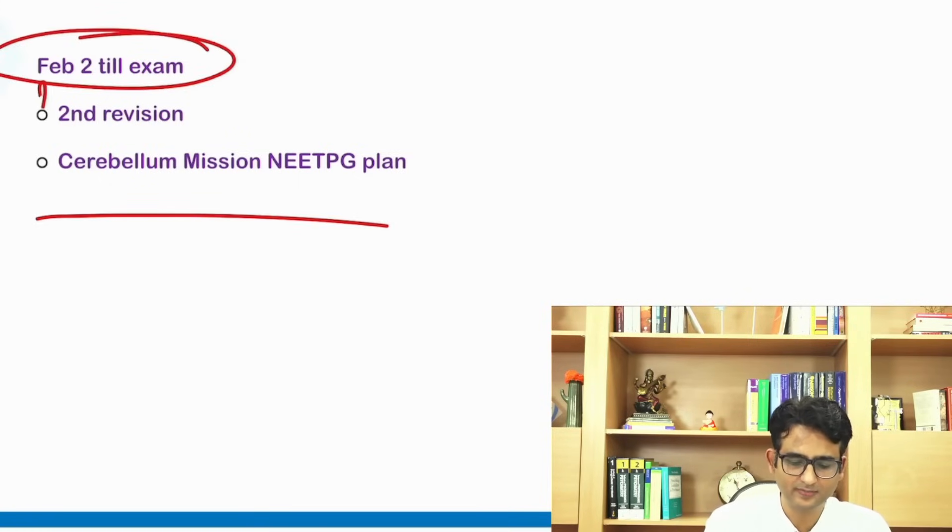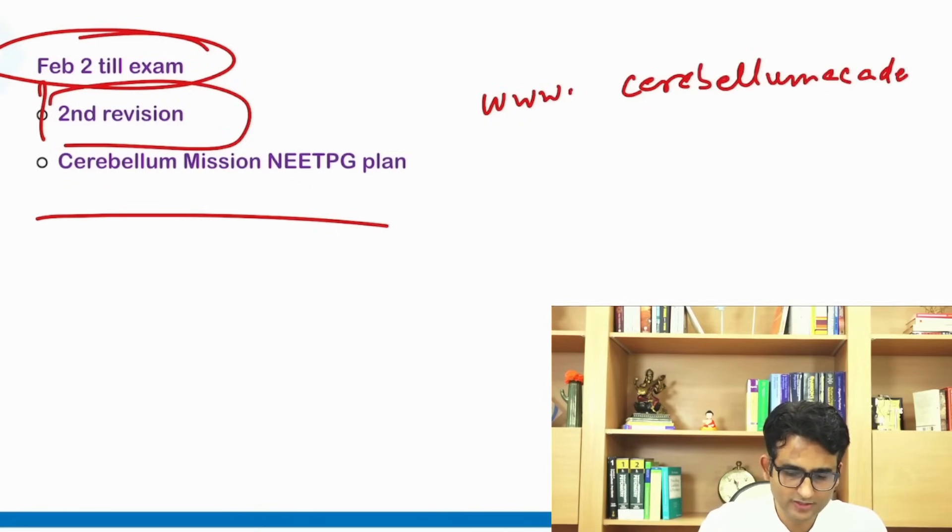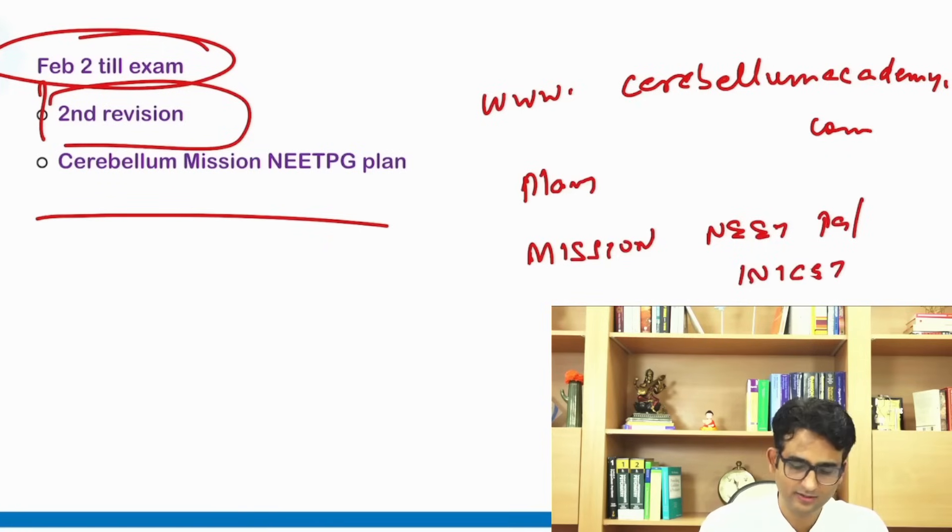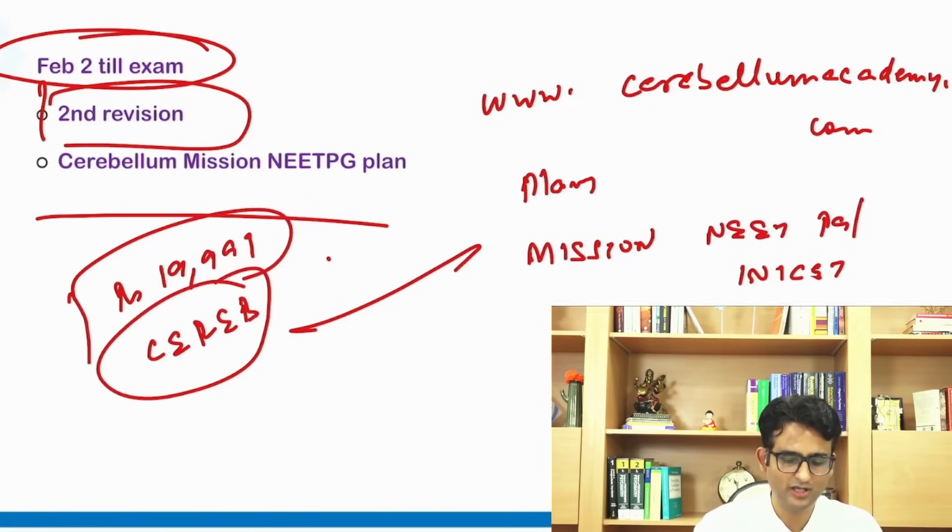After second of Feb till the examination you can do your revisions. It would be more of a self-study thing. We'll probably have some bonus sessions, but it would be primarily self-study. So this is our plan going forward, and if you are not a student of Cerebellum Academy you can go to www.cerebellumacademy.com. There you will see the plans and in the plans you will see Mission NEET PG INI CET. You can enroll in that plan and the charges are rupees 19,999, but you can use this coupon code CERIB and it will give you 1k off.